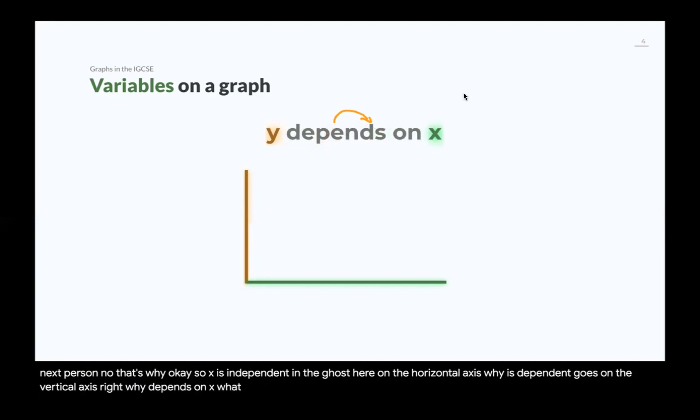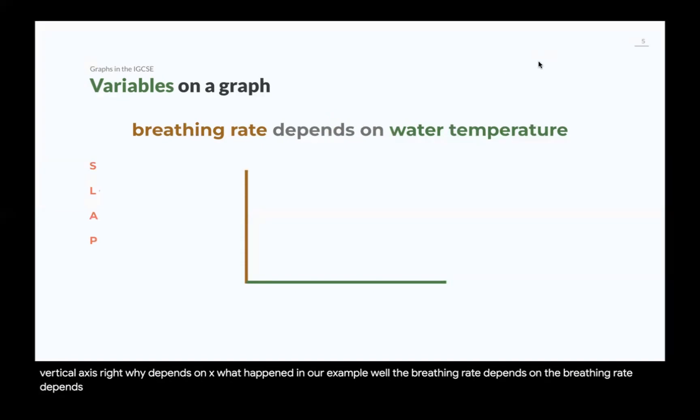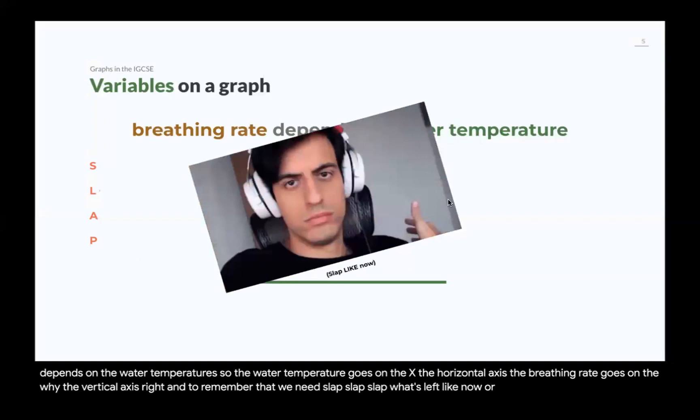What happened in our example? The breathing rate depends on the water temperature. So, the water temperature goes on the x, the horizontal axis. The breathing rate goes on the y, the vertical axis. And to remember that, we need slap. Slap. Slap what? Slap like now, or subscribe if you haven't already.